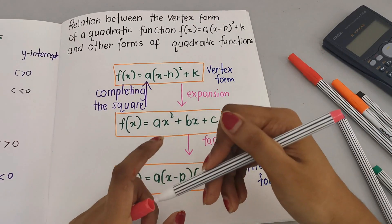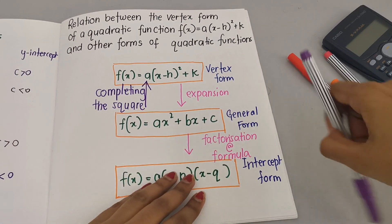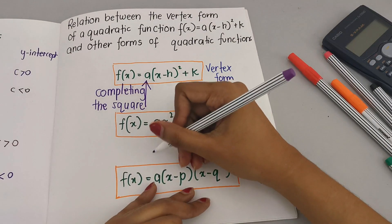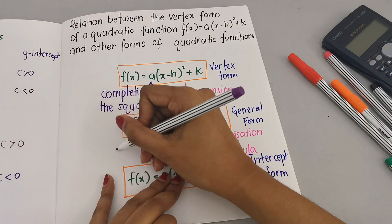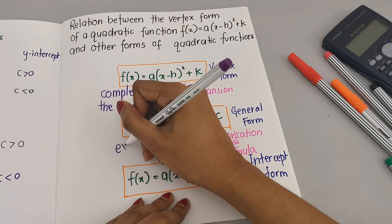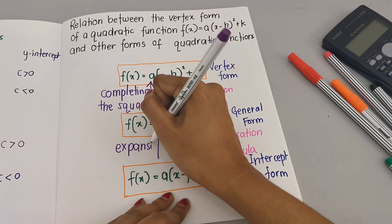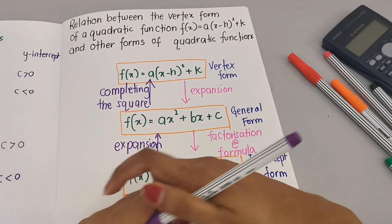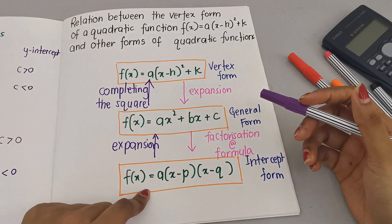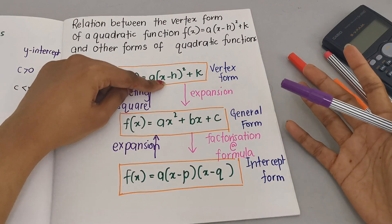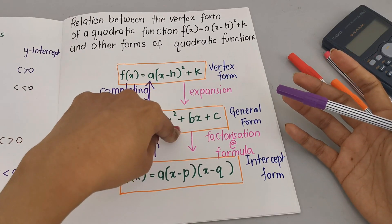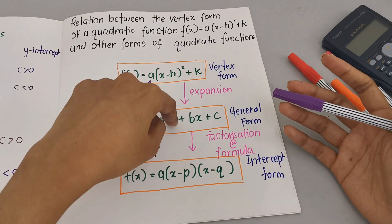Now what happens if you have intercept form but you want to change back to general? You need to do expansion. What if the question asks you to change vertex to intercept? We need to follow the steps: first we change to general, expand first.